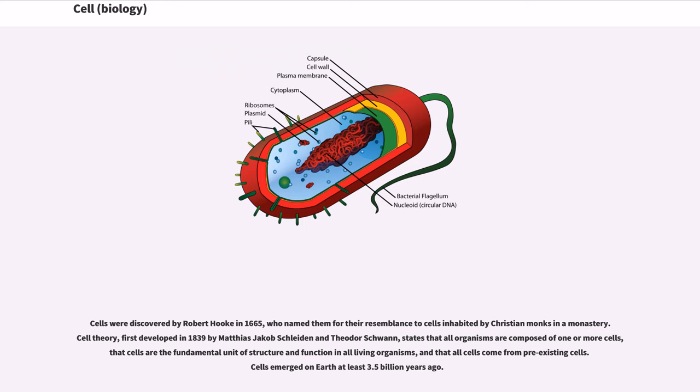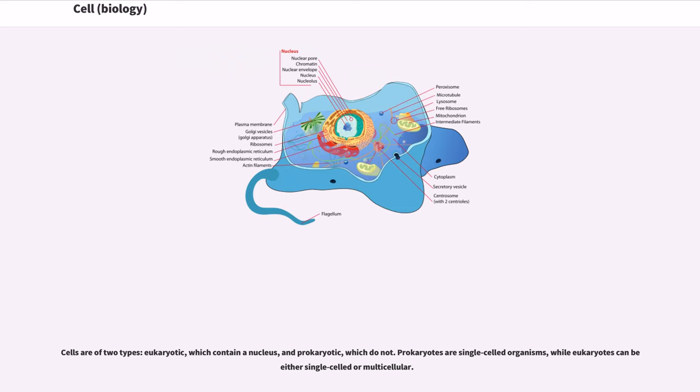Cell theory, first developed in 1839 by Matthias Jacob Schleiden and Theodore Schwann, states that all organisms are composed of one or more cells, that cells are the fundamental unit of structure and function in all living organisms, and that all cells come from pre-existing cells. Cells emerged on Earth at least 3.5 billion years ago.